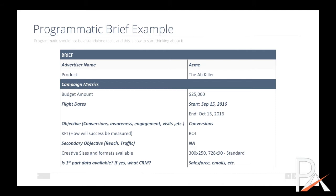If you want a good case study on how to sell, just watch infomercials and you will learn a lot. So let's run down this quickly. Campaign metrics: budget amount $25,000, flight dates starting September 15th through October 15th, 2016. The objective is conversions, KPI is ROI, secondary KPI is none.